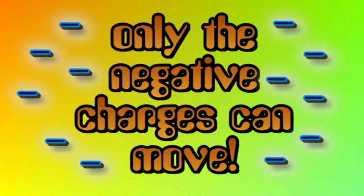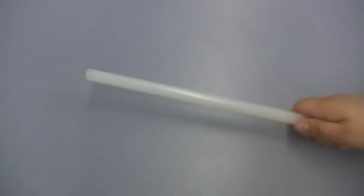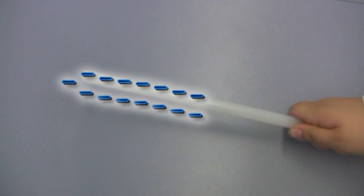Remember, only the negative charges can move. Bearing that in mind, can you now explain why a polythene rod becomes negatively charged?